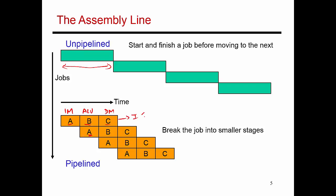This is instruction one going through the three different stages. This is instruction two going through the three different stages, and so on. By the time you get to cycle three, there are three different instructions in the pipeline: instruction three going through the instruction memory stage, instruction two going through the ALU stage, and instruction one going through the data memory stage. These are three different instructions all being processed at the same time, and we can do this parallel processing by decomposing the circuit into three different sub-circuits, each handling a different instruction.